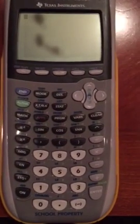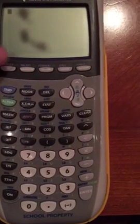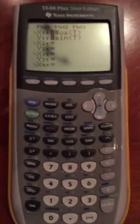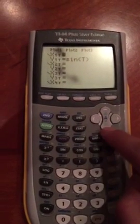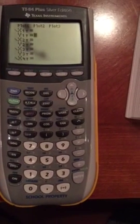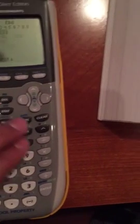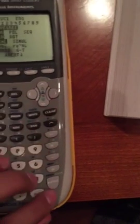So first, we are going to go into our y column, our y equals column. Okay, so there's nothing in here for now. But what we're going to do first is we're going to go to our mode. And we're going to make sure that we're in radians.